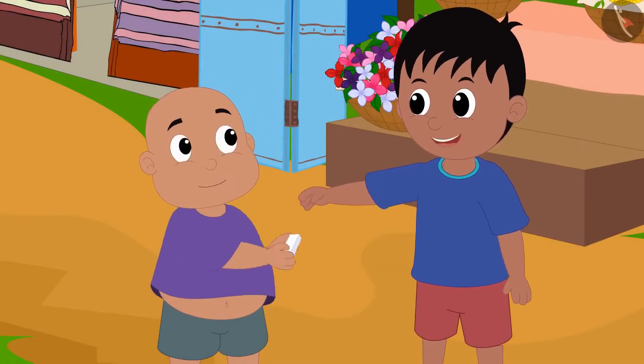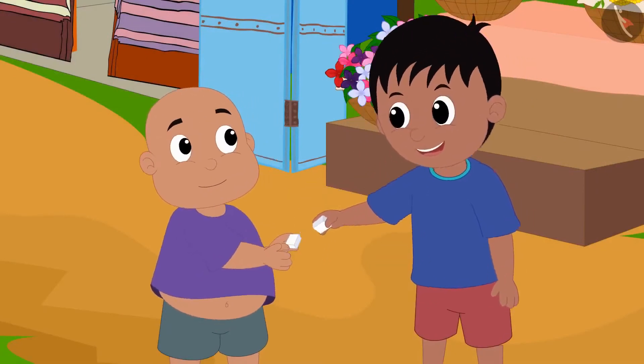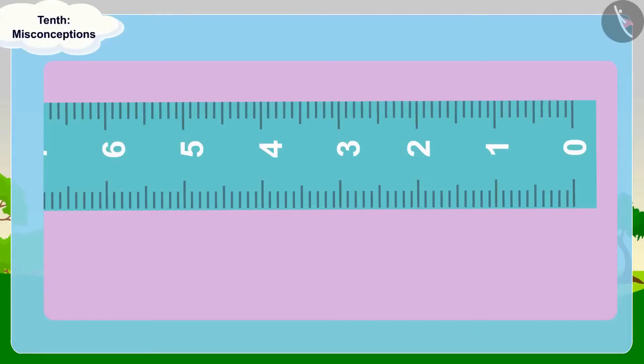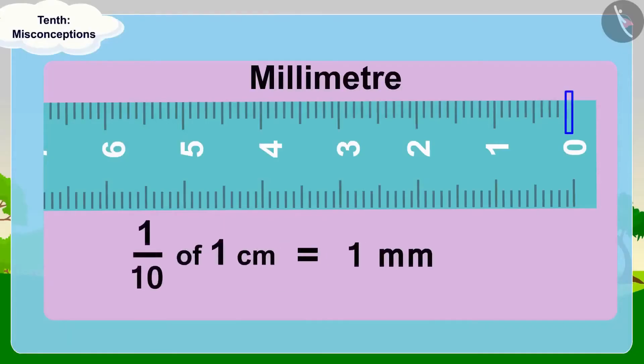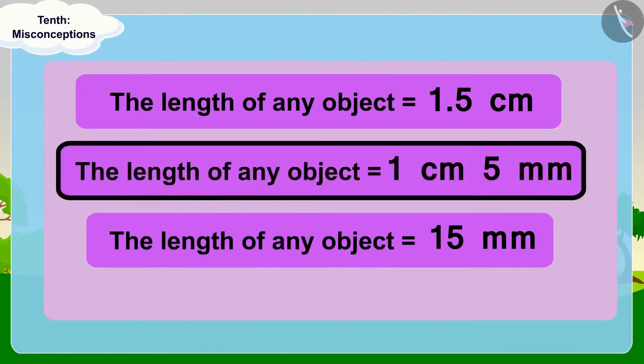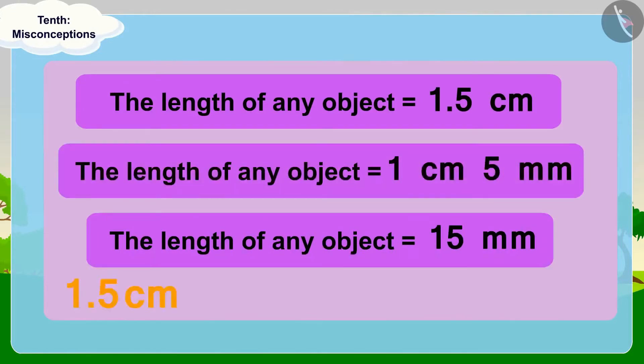Bunny's statement is absolutely correct. Half of the eraser is 1.5 centimeters or 1 centimeter and 5 millimeters long. Raju and Babalu split the eraser in half. Children, because millimeter is 1 tenth of a centimeter, we can write the length of any object in these three ways and it is exactly the same.